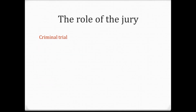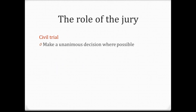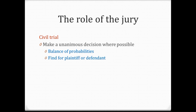In a criminal case, the jury needs to reach a unanimous decision where possible, meaning all jury members must agree on the verdict. They can find the person guilty of the offence, guilty of a lesser offence, or not guilty. In a civil case, the jury also tries to reach a unanimous decision, deciding on the balance of probability which party is more likely to have truth on their side, finding for the plaintiff or defendant, and deciding on the remedy and amount of damages to award.